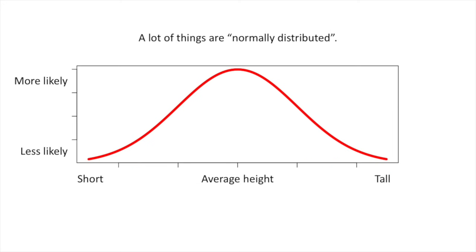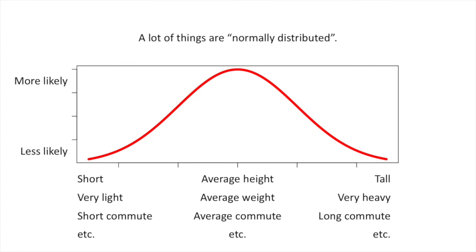Lots of things are normally distributed. We've been talking about height, but there's also weight, commuting times, and many more things.